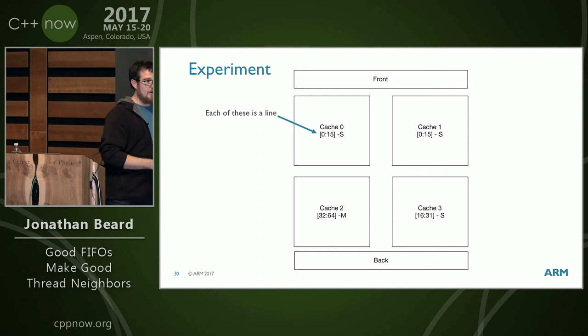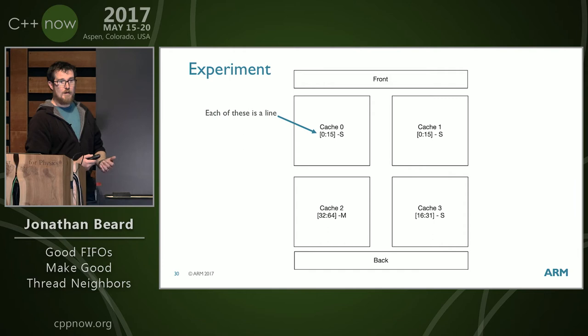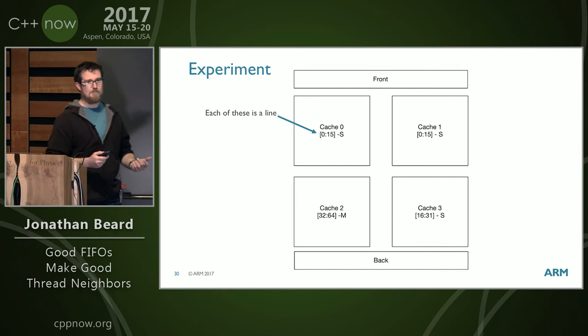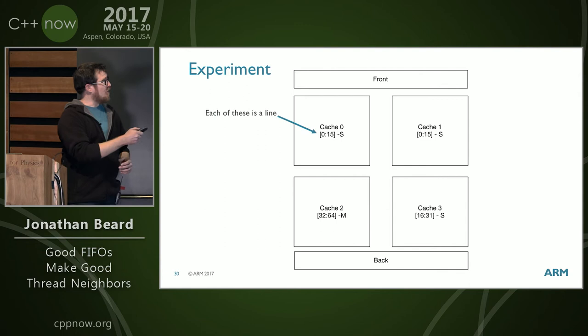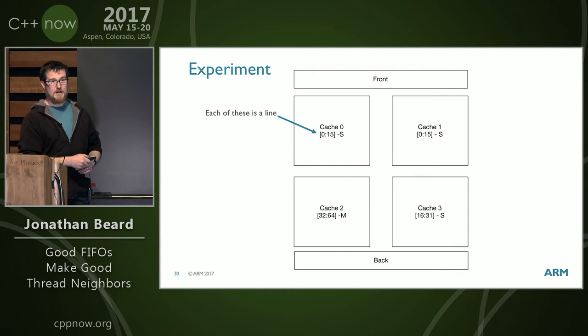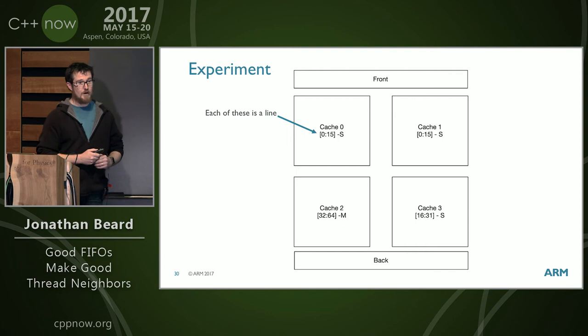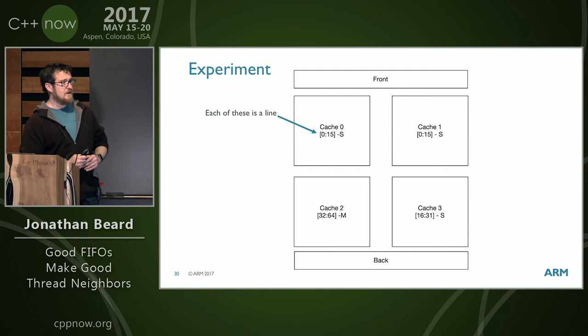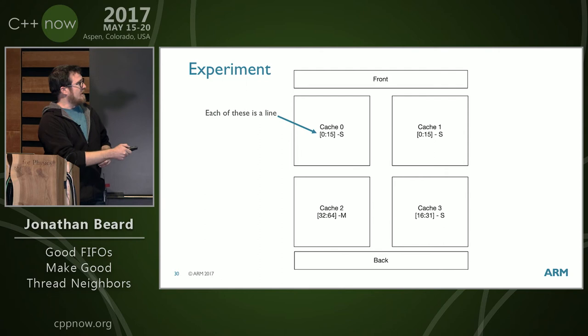If cache 0 now wants to read that line again, it has to request cache 1 to share it. Cache 0 will get an ACK along with the updated values of the line. So instead of going all the way out to memory, we just snoop it across the coherent network. But how does cache 1 know which cache to go to when it originally needed a line? It has no idea what's in the other cores.